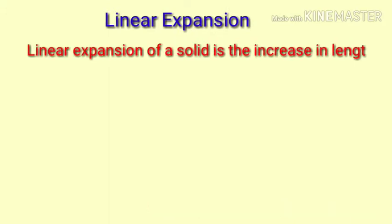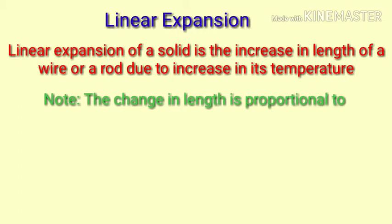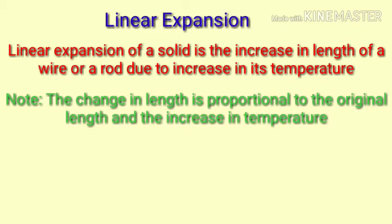Let us check linear expansion. The linear expansion of a solid is the increase in length of a wire or a rod due to the increase in its temperature. It is clear that when you have some elongated thing like a wire and if the length increases when you provide temperature to it, that is called linear expansion. A very important note is the change in the length is proportional to the original length and the increase in temperature. More the temperature, more the increase in length.